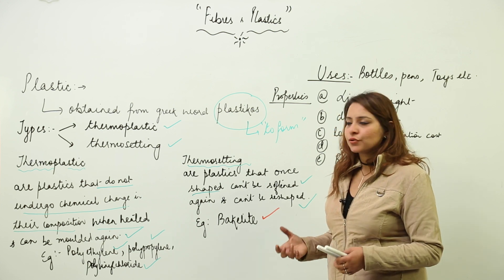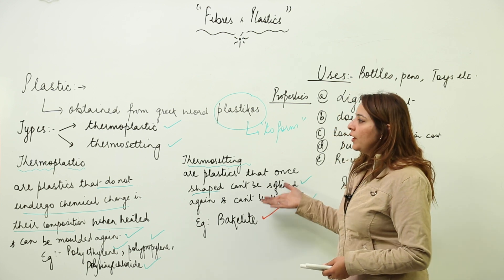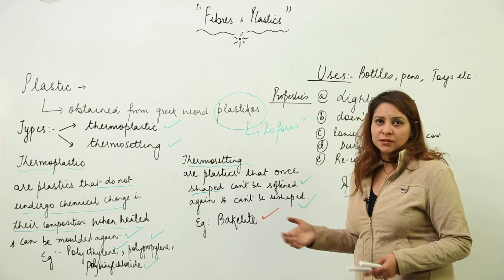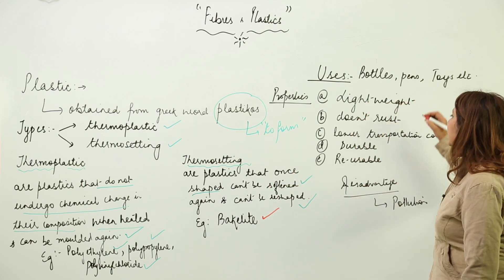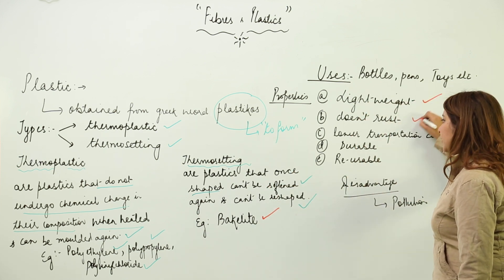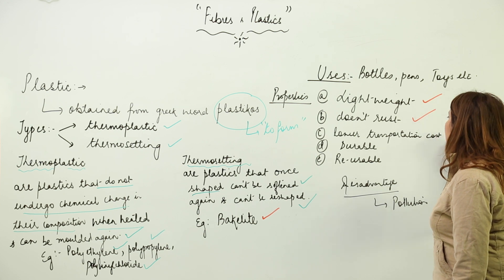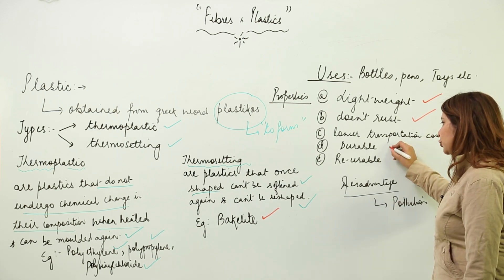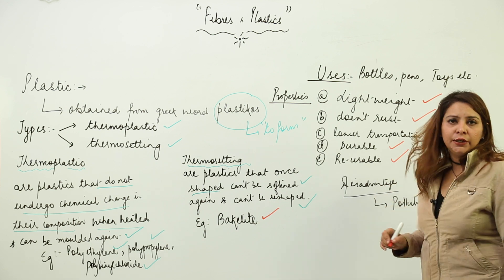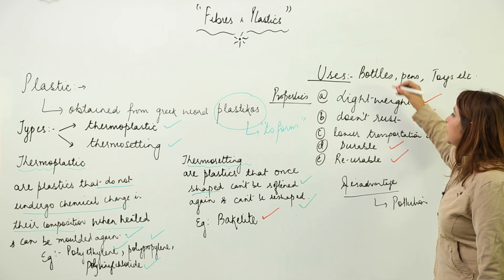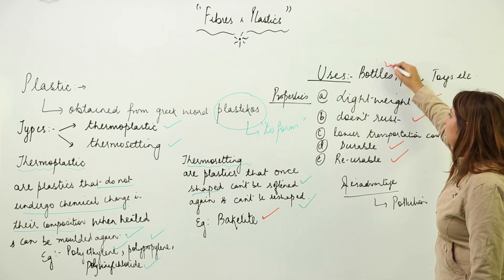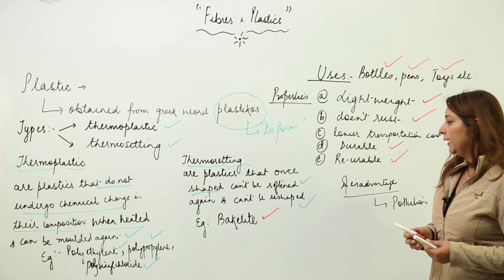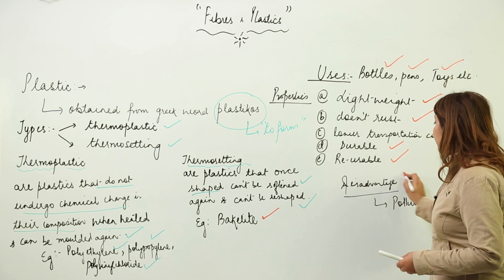If we talk about the properties of plastic, we see that it is lightweight, does not rust, has lower transportation cost, is durable, and can be reused. Due to these reasons, plastic has been used in making bottles, pens, toys, and many other things we see around us.